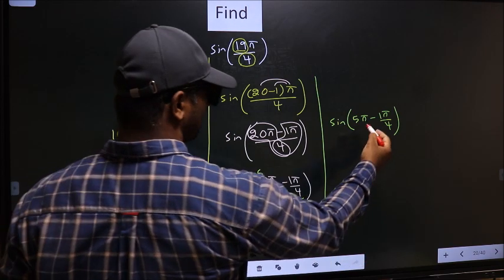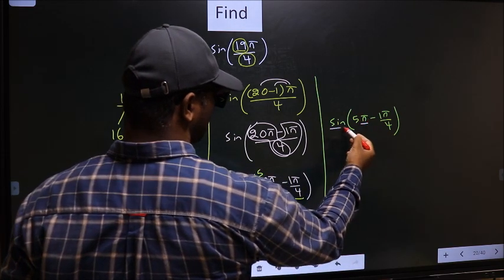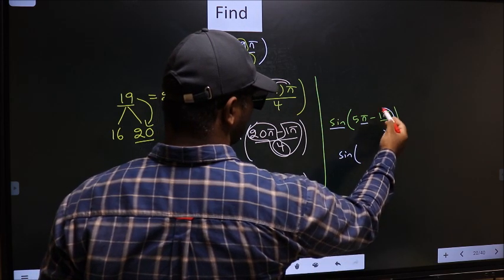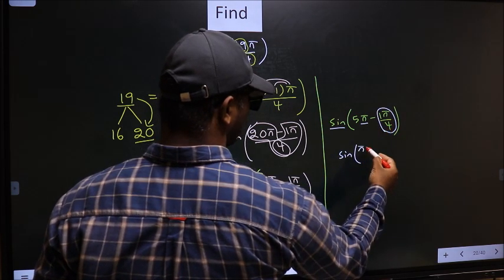Next, here we have π. So sin is not going to change, it will remain sin. And inside we get this angle π by 4.